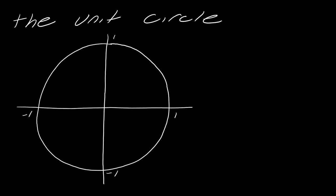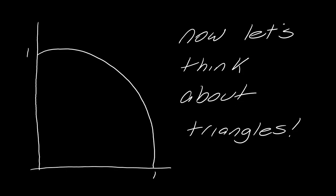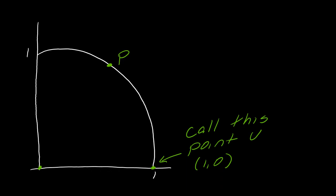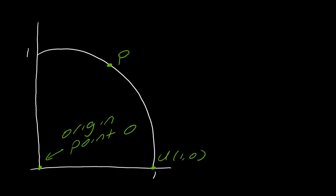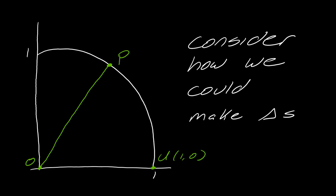One of the most basic things in trig is the unit circle. We're going to start with the unit circle and focus on the first quadrant. I'm going to create a random point P — it could be really any point as long as it's somewhere in that quadrant. Then I'll take the point that's actually on the unit circle and call that point U, and take the origin and call that point O. So I've got these three points, and from here I'm going to draw a line from O to P and consider how we can make triangles using this.